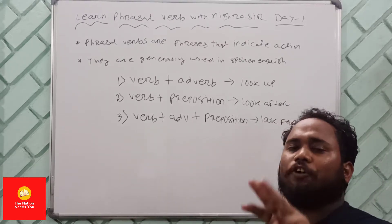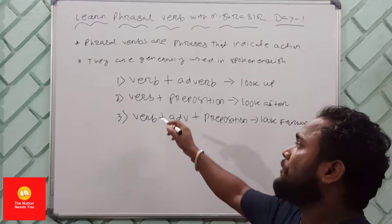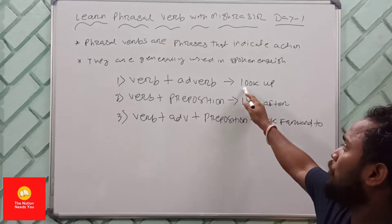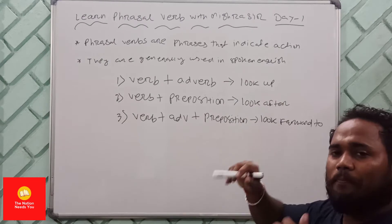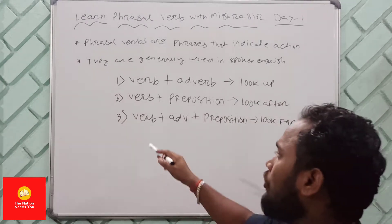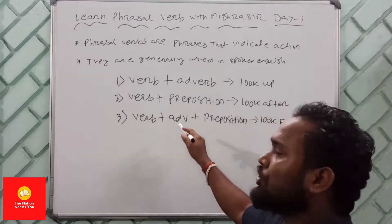You have three options to form a phrasal verb. First, you can create a phrasal verb with verb plus adverb — for example, 'look up.' Second, verb plus preposition.